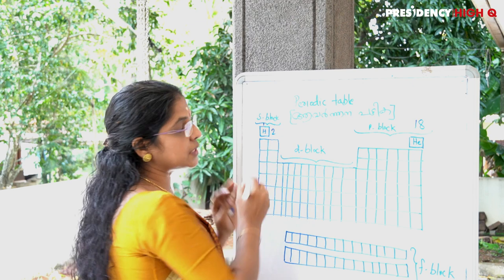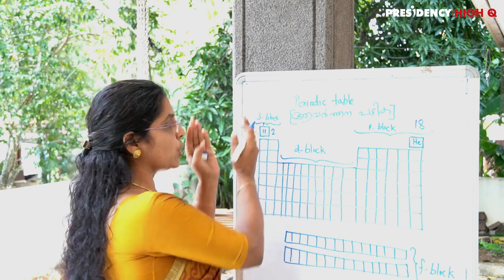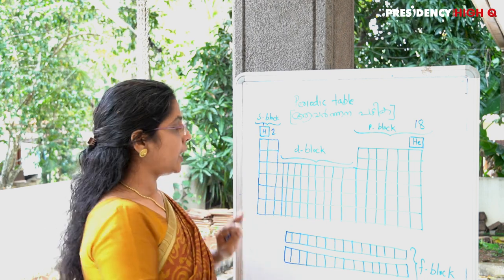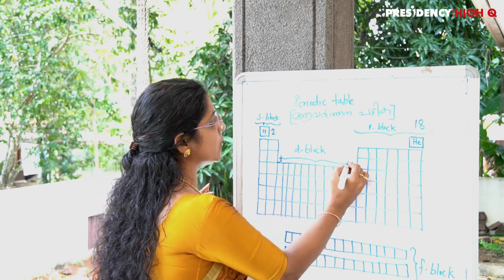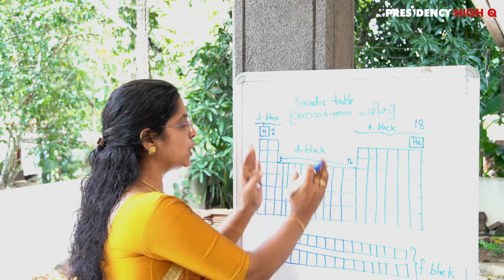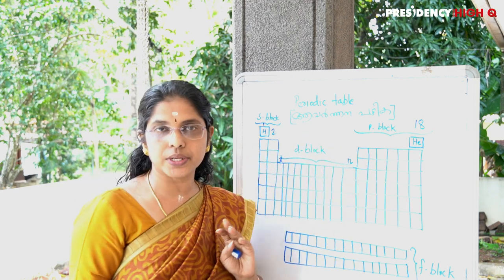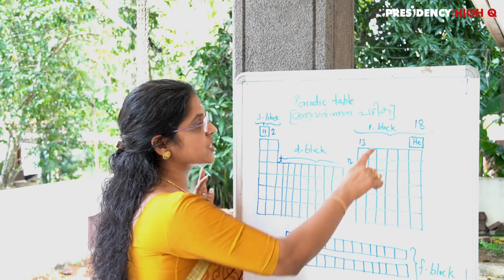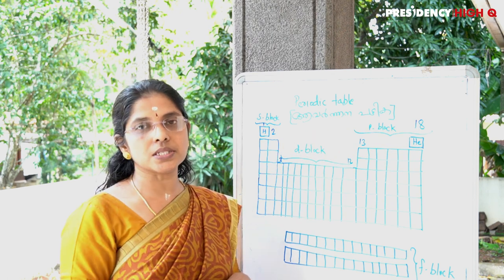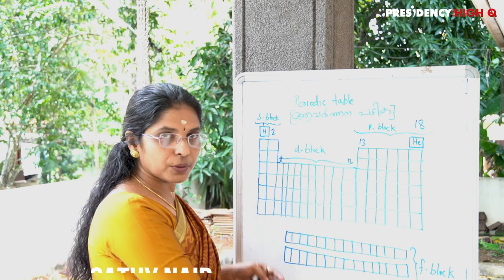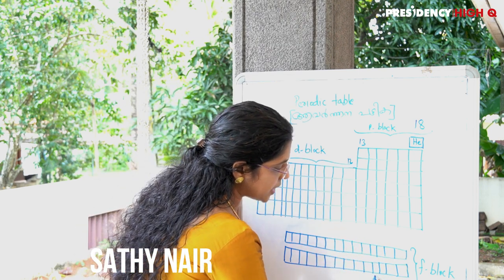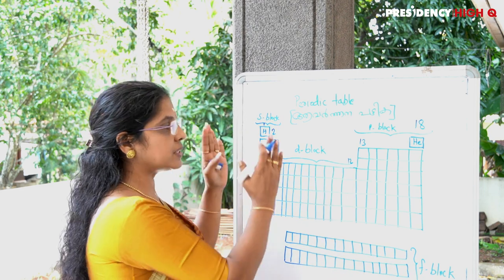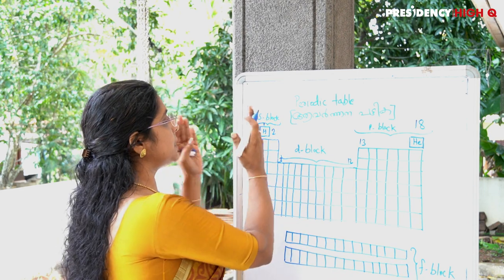Groups 1 and 2 together are known as the s-block elements. Groups 3 to 12 are known as the d-block elements. Groups 13 to 18 are known as the p-block elements.